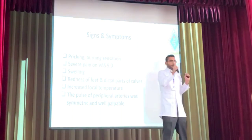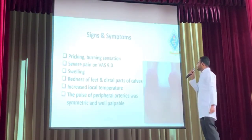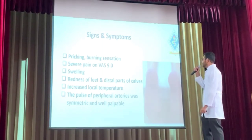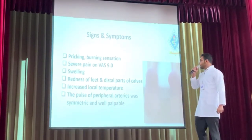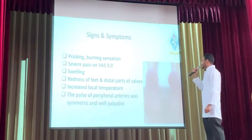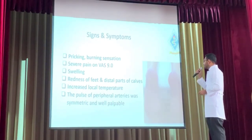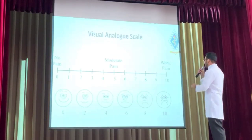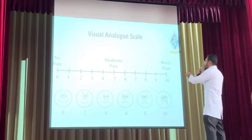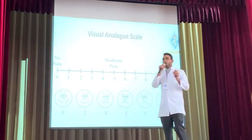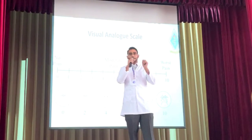I had a case at the Asian Medical Institute involving a 42-year-old lady with a burning, pumping sensation. Severe pain on the visual analog scale was 9. Symptoms included swelling, redness of the feet, and increased local temperature. The pulse of the peripheral arteries was symmetrical and palpable. Here you can see the visual analog scale — first, let me explain how we use it.